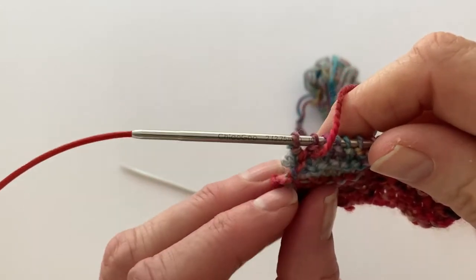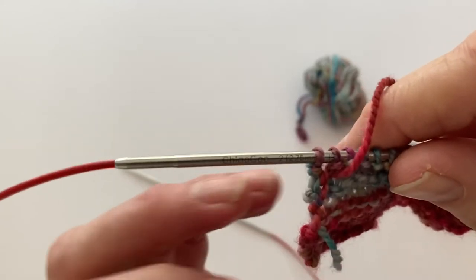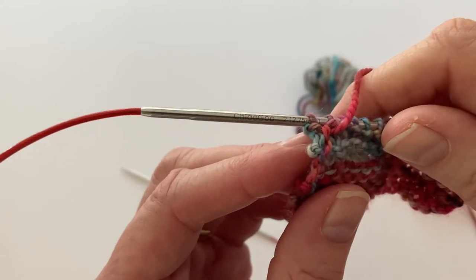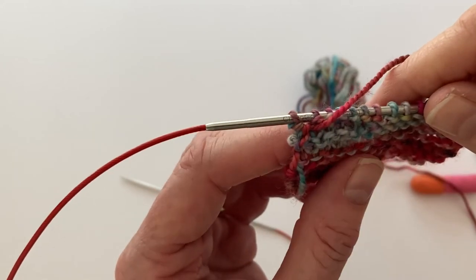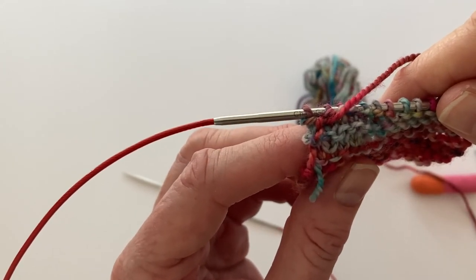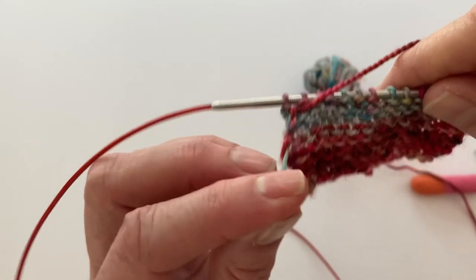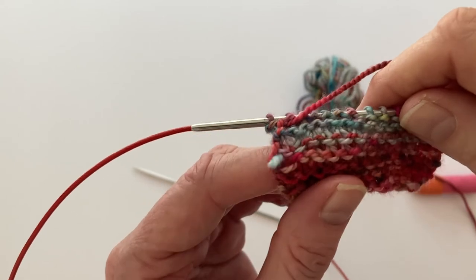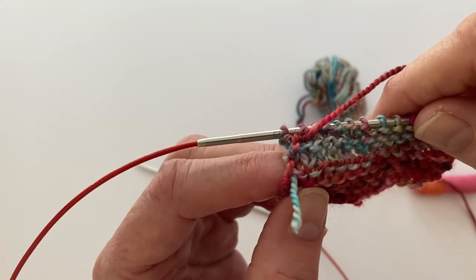You can see those little stitches there where the yarn has been caught in at the back. This little blob here is because I did not pull my yarn tight enough and that's something important to remember as you join in the new yarn.